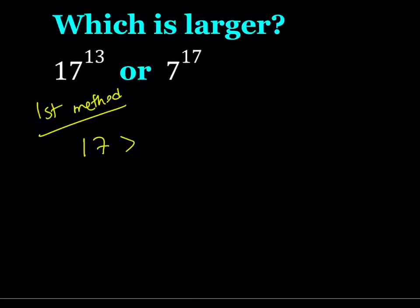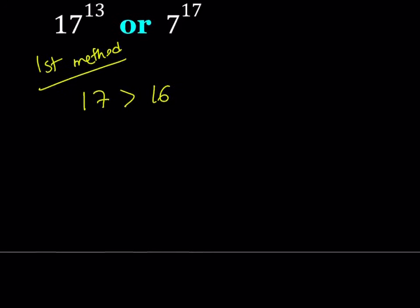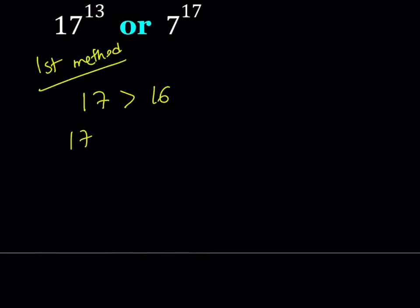17 is obviously greater than 16 which is 2 to the fourth power. So I can safely say that 17 to the power 13 is greater than 16 to the power 13, and since 16 can be written as 2 to the fourth power, I can raise it to the 13th and that's going to give me 2 to the power 52 because we multiply 4 times 13. So 17 to the 13th power is greater than 2 to the 52nd power. These are very large numbers.